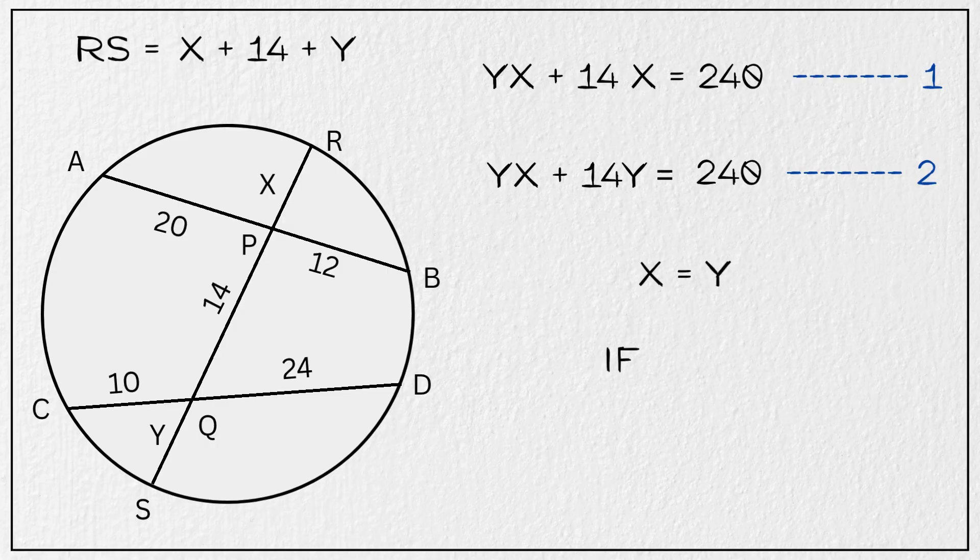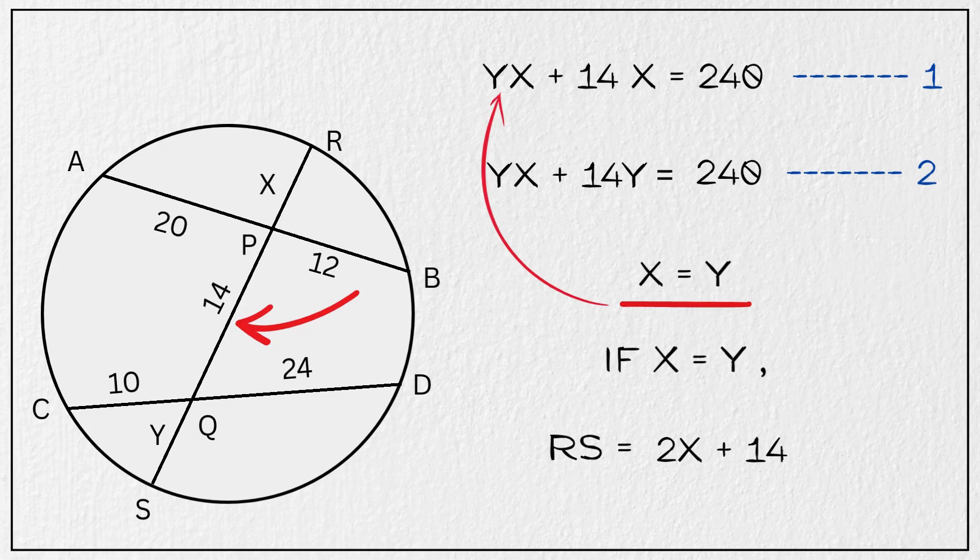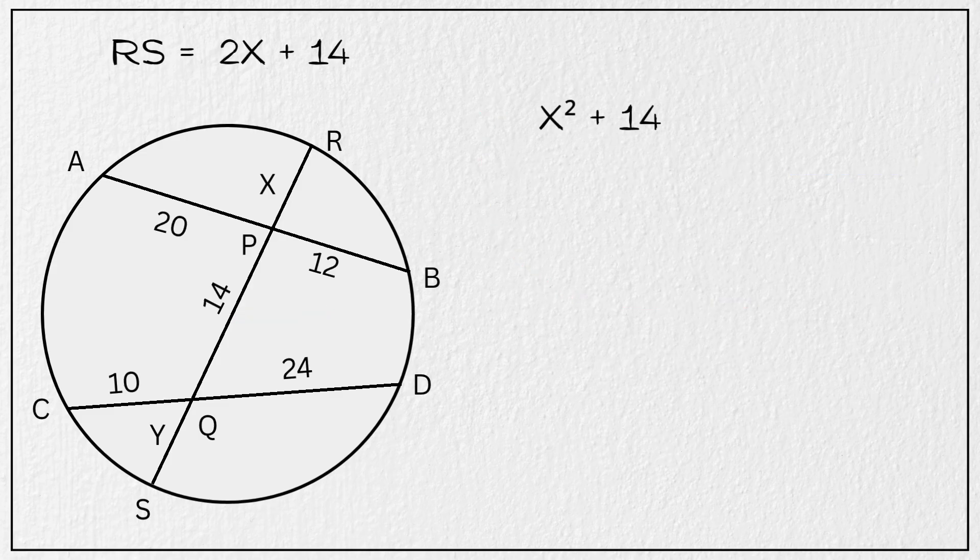So if X is equal to Y, then the total length of chord RS is equal to X plus 14 plus X, which simplifies to 2X plus 14. Now let's substitute this value of Y as X in equation 1. Thus we have X squared plus 14X equals 240.